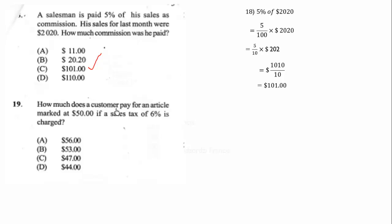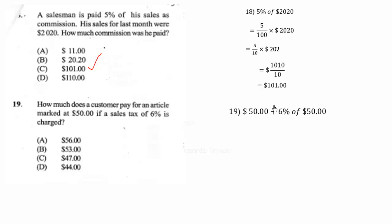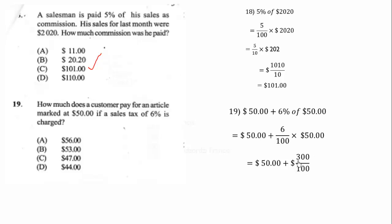How much does a customer pay for an article marked at $50 if a sales tax of 6 percent is charged? The amount paid by the customer is the marked price plus the tax. The tax is 6 over 100 times $50, which equals 300 over 100, giving $3. Adding $50 and $3 gives $53, so the correct answer is B.